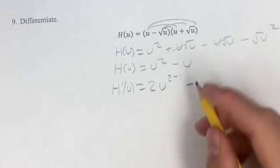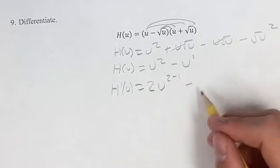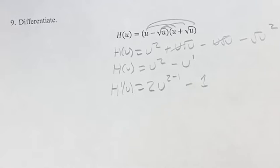term, instead of using the power rule it's a little bit easier just to think linear term u to the first power or x to the first power, just the coefficient is the derivative. In this case we have minus u is minus one u, so the coefficient is minus one.